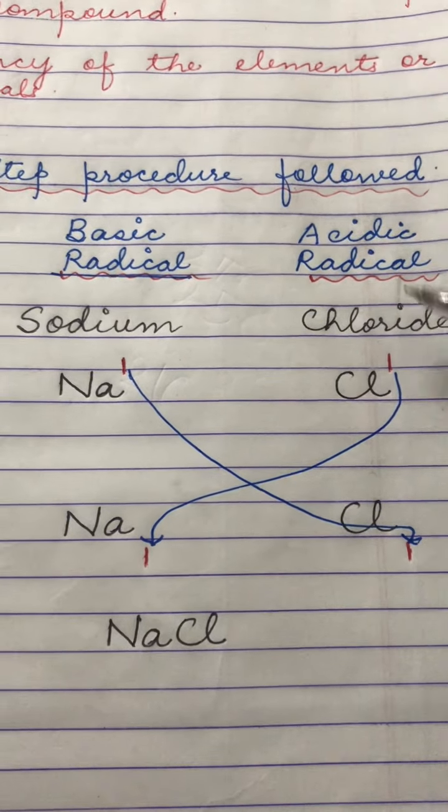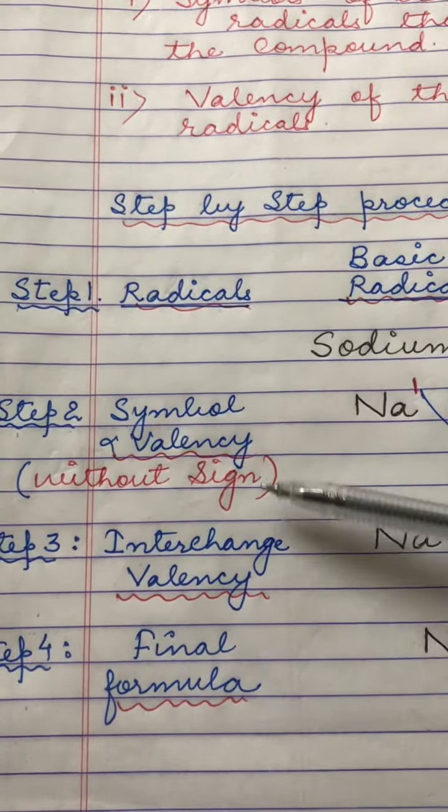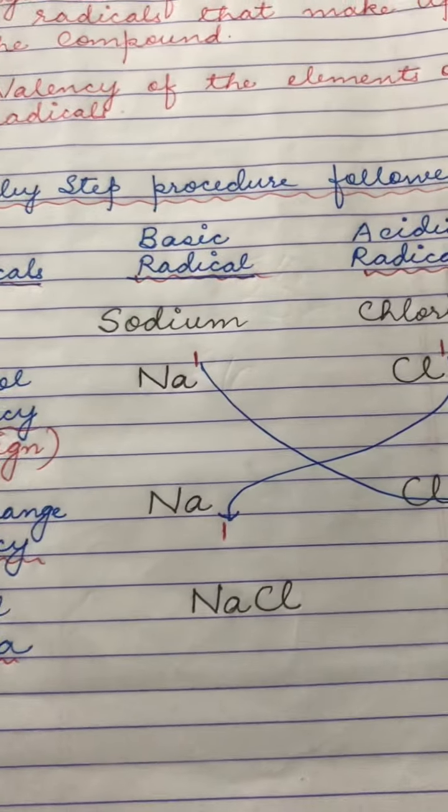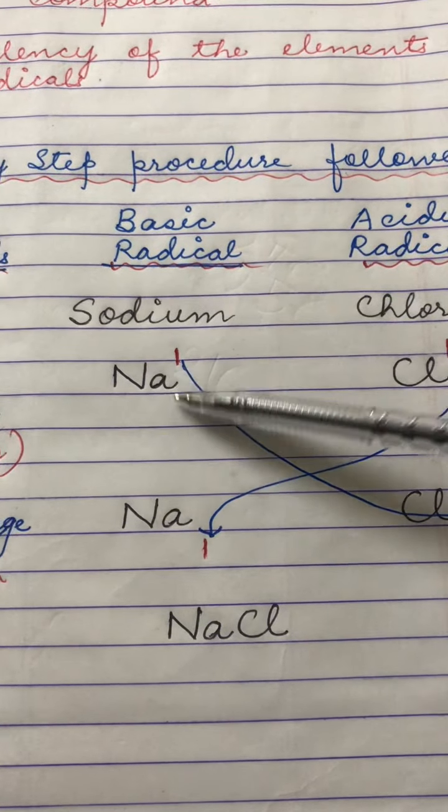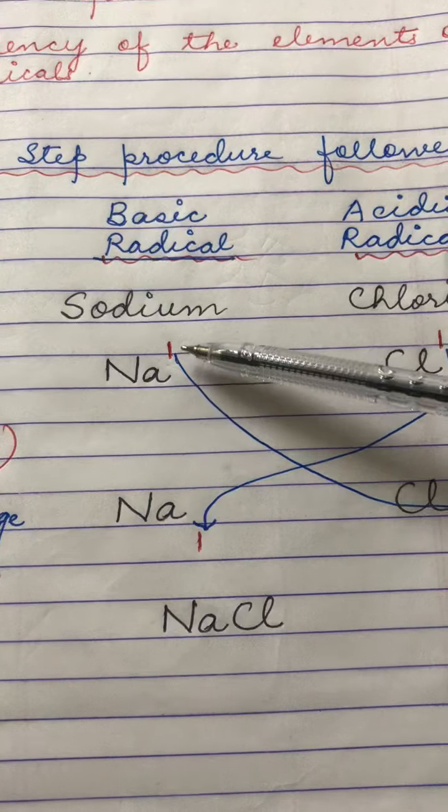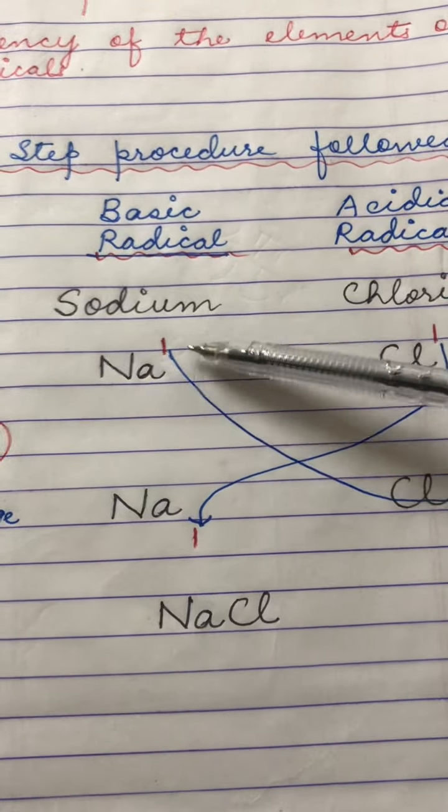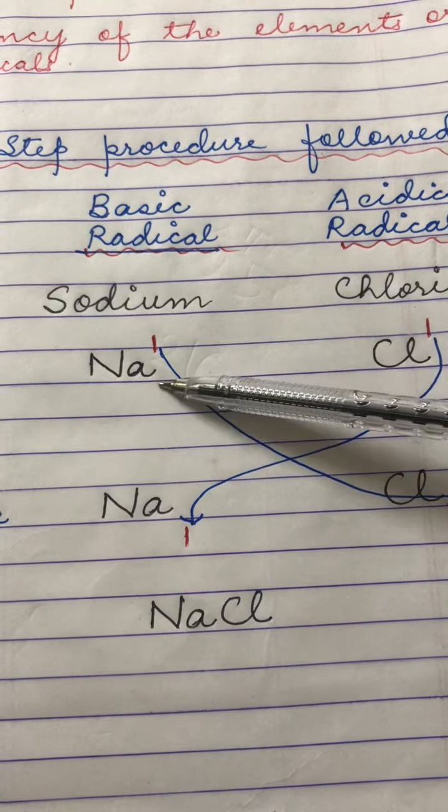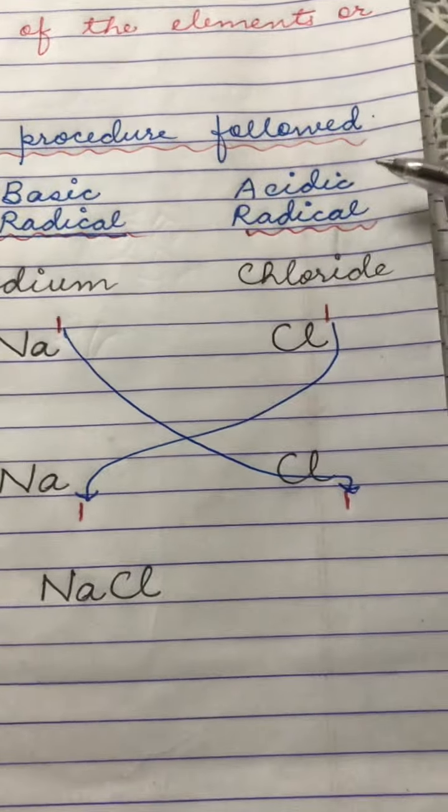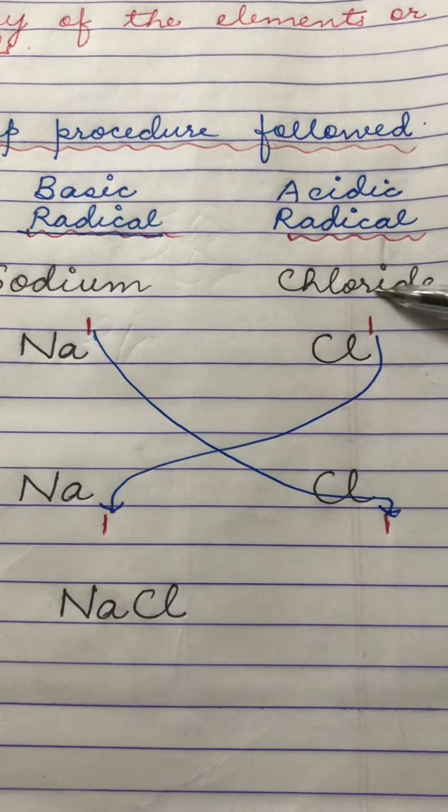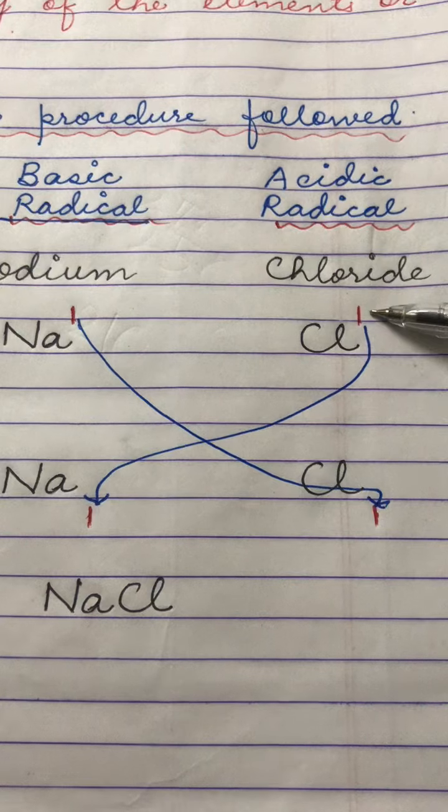Now the second step that we follow is you write the symbol and valency of the element or the radical. The valency and the symbol of sodium is: sodium has a symbol Na and its valency is one. We always write the valency on top, that means as a superscript. You do not write it below. So this is the first step and you need to be very particular about this step. Second is the acidic radical present is chloride, which is written as Cl as a symbol, and its valency is one.